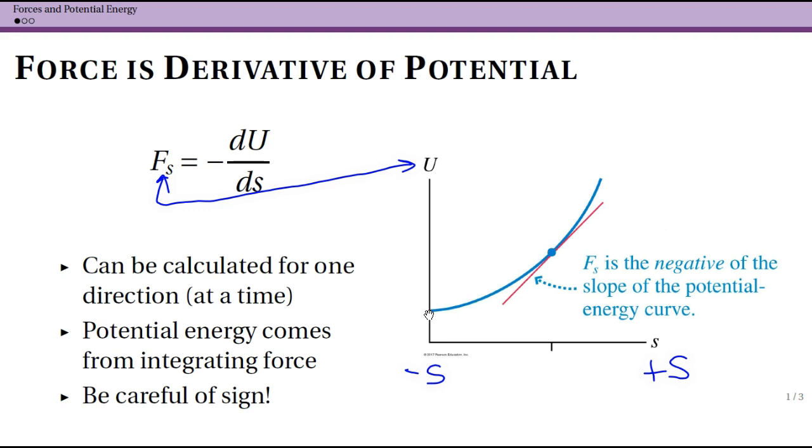If the potential is getting larger as we go to the right, that means the force is pulling it to the left. So we would say here that it's a positive slope, it's curving upwards, but the force is actually to the left.